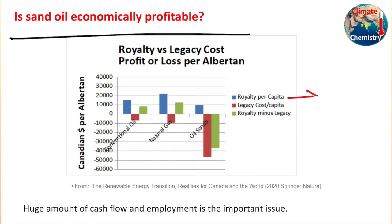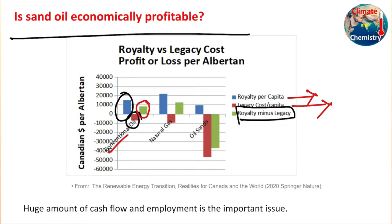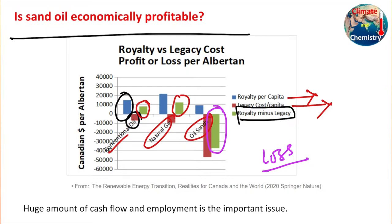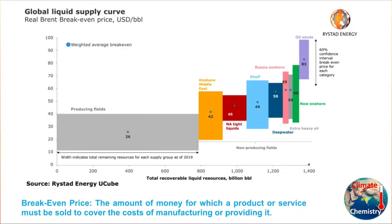If you consider royalty as the gain and legacy as the investment, then net profit equals royalty minus legacy. For conventional oil or petroleum this is positive — there is a profit. For natural gas there is relatively more profit. But for oil sand, surprisingly, this is significantly negative — it's actually a loss-making industry. Yet this industry continues because of huge cash flow, employment, and indirect economic benefits to the country.